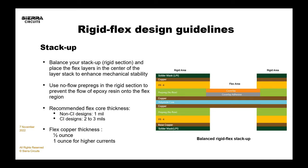Some common flex cores: one mil can be a very common use case. But when doing controlled impedance design, we recommend slightly thicker flex materials, like two to three mils. In terms of copper weights, your options include one-third ounce, half ounce, and one ounce — all can be used.